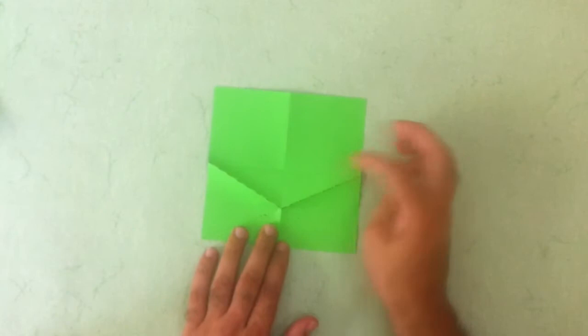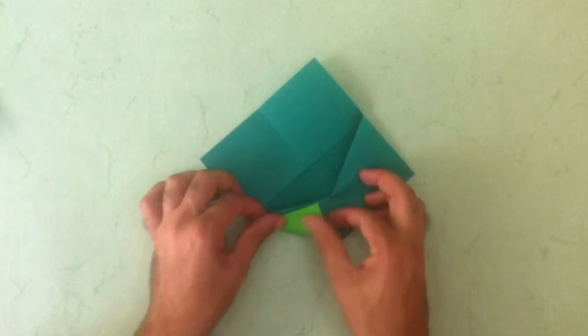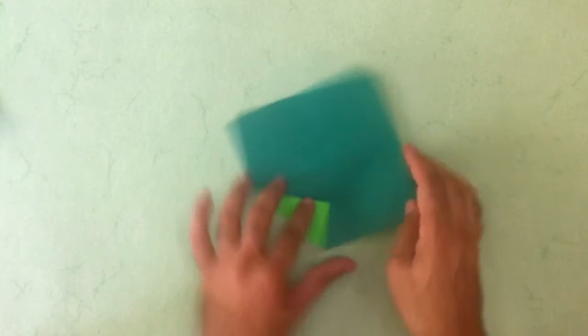So we have those two lines, turn it over and align the edges with the new crease line. This is one and this is two.